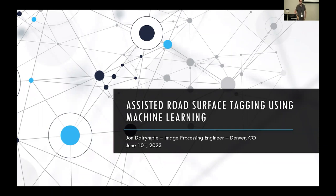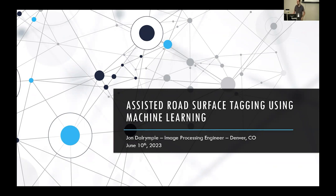My name is John Dowerpole. I'm a senior image processing engineer for Lockheed Martin. I'm also a grad student studying applied and computational mathematics at Johns Hopkins University. I'm actually representing one of those today — this is just a passion project related to assisted road surface tagging using machine learning.